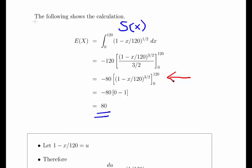When x = 120, we get (1 - 120/120)^(3/2) = 0. When x = 0, we get (1 - 0/120)^(3/2) = 1. So we have -80 times (0 - 1), which is -80 times -1, therefore the answer is 80. I'm just going to reset and we'll have a go at the variance.